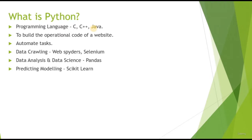Python is used to build the operational code of a website. What we see on a website is actually the front-end design. Once we click on a button, fill in a form, and submit it, all of the functional code is processed using a back-end programming language. This can be JavaScript, Python, or many other programming languages.